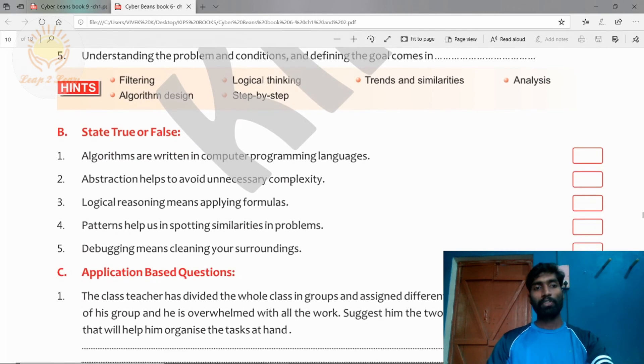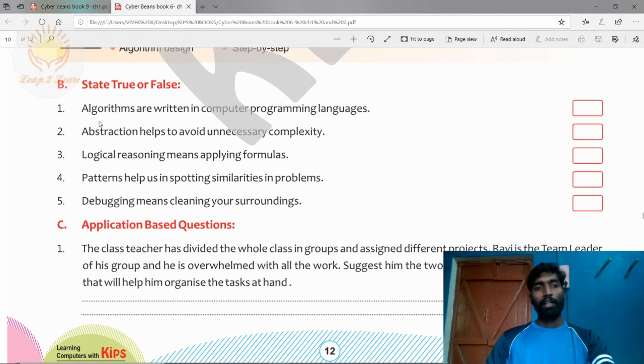Algorithms are written in computer programming languages. Is it true? No, it is false. First answer is false. Algorithms are written in simple language. Humans can be able to understand and it is a step-by-step process. It is not a programming language, it is a step-by-step process.